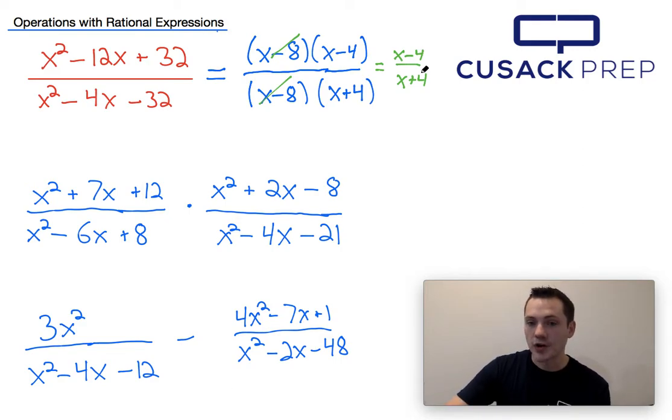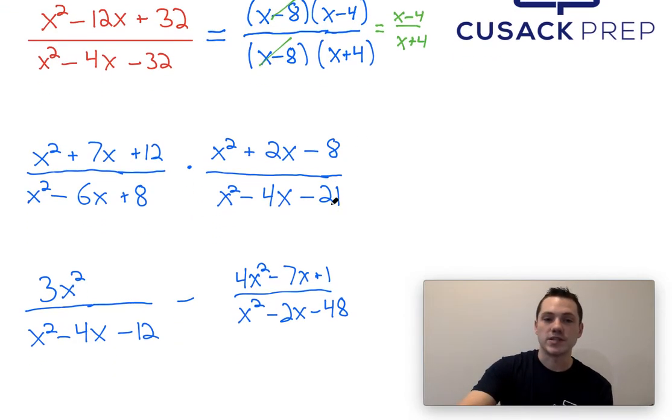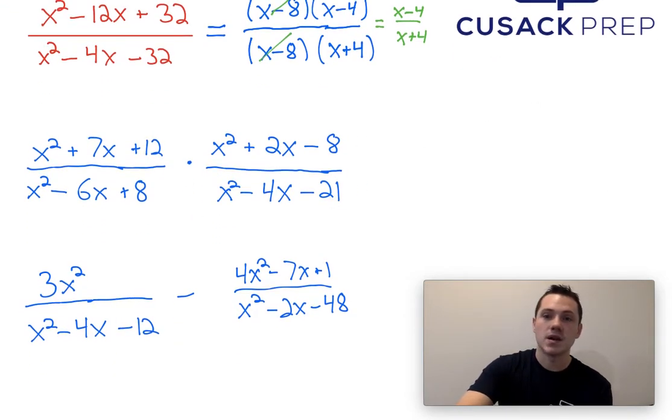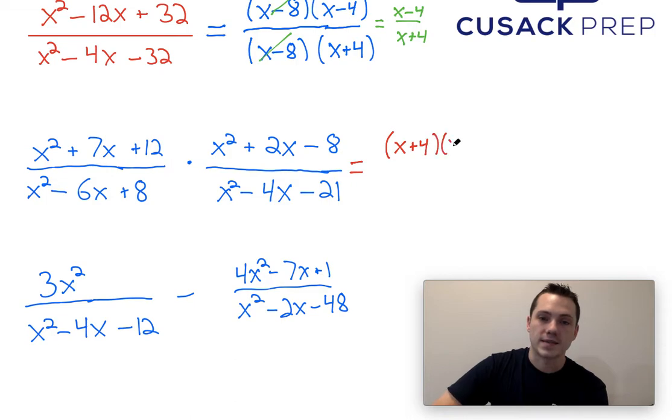Let's try to see if we can make it a little bit harder. For this next one, we're going to be dealing with multiplication between two different rational expressions. While it might seem complicated, fortunately it's actually really easy. All we have to do is start by factoring. So I'm going to start by factoring this first term. Two numbers that multiply to 12 but add to 7 would be (x + 4)(x + 3).